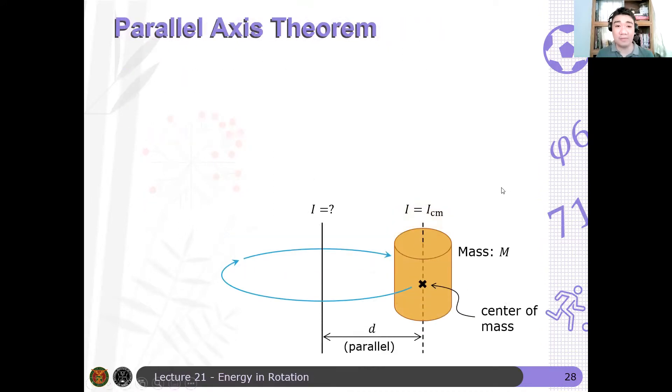then the moment of inertia of the other one is given by the parallel axis theorem. If I is the moment of inertia of an axis that has a perpendicular distance d from the axis of rotation about the center of mass, then the parallel axis theorem says that I equals I_cm plus Md squared, where capital M is the total mass of the rigid body. Questions?